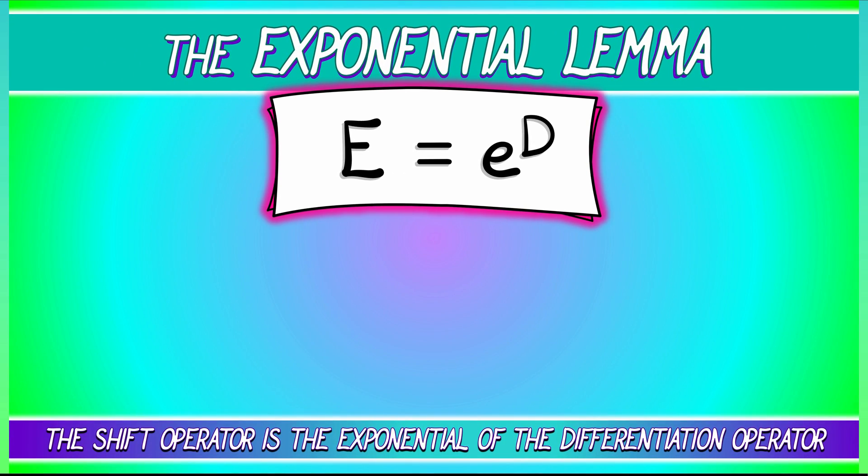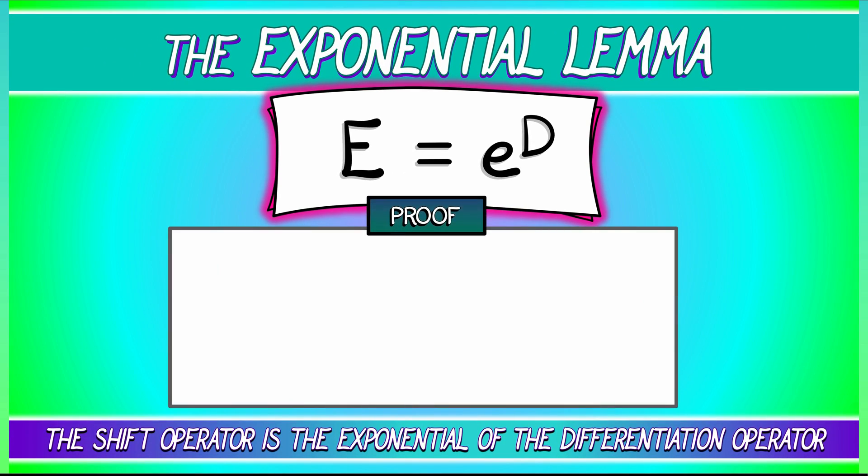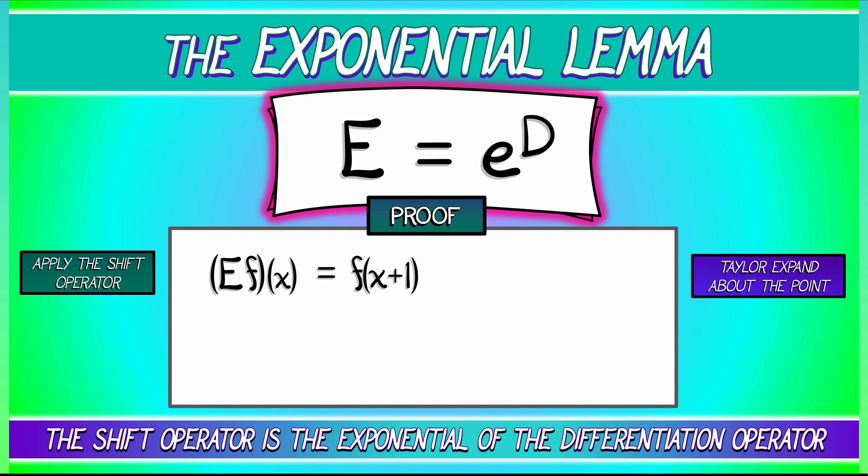Taylor series—why does that matter? Oh, let's see. Let's do the proof of this result. Consider the shift operator E. Let's apply it to a function f and then evaluate that at an input x. What is that? By definition, that is f of x plus one. Now let's think about this from a Taylor series point of view, as has been so useful to us along the way. We're going to expand f about the input x. Doing so, we get that f of x plus one is the sum, as k goes from zero to infinity, of one over k factorial times the kth derivative of f.